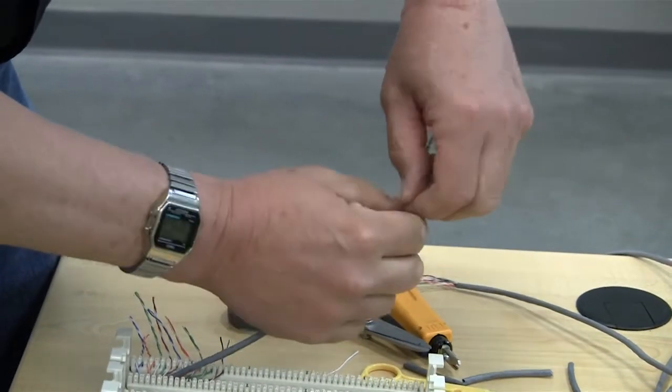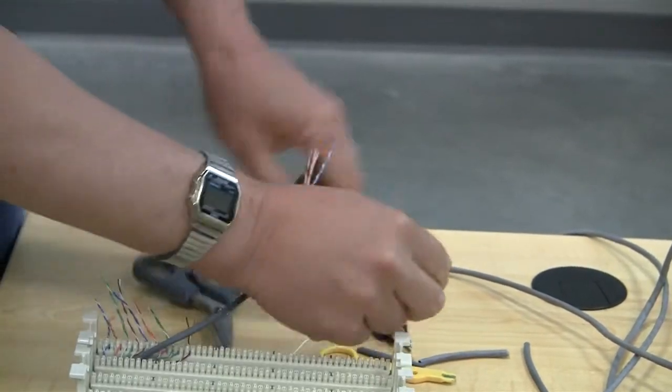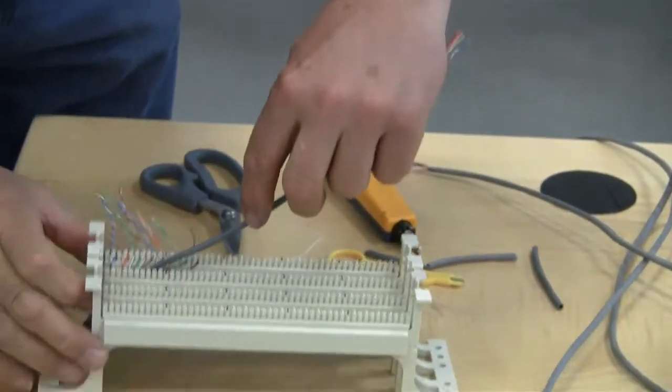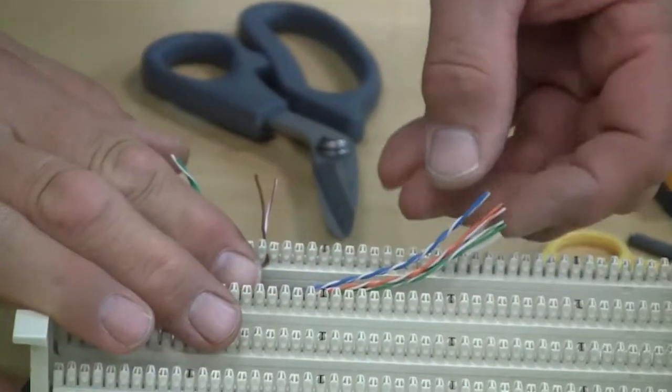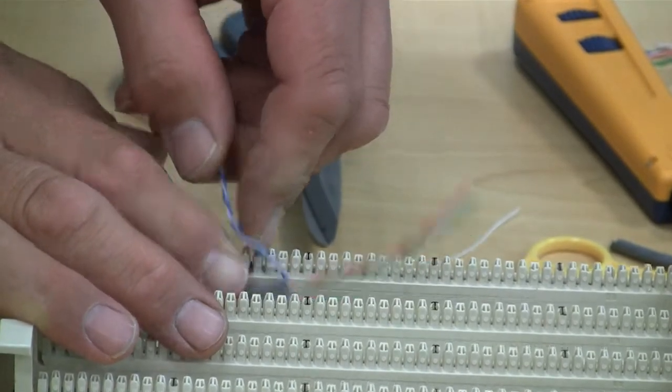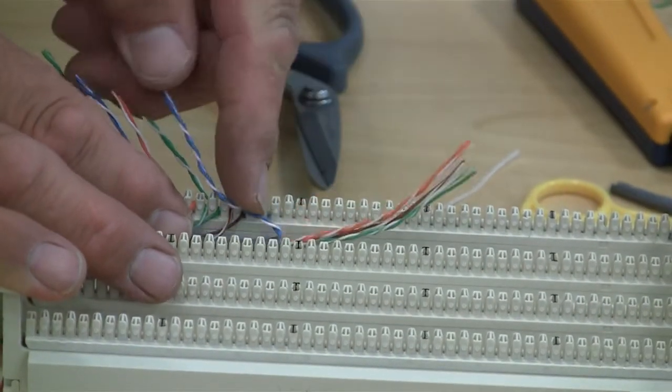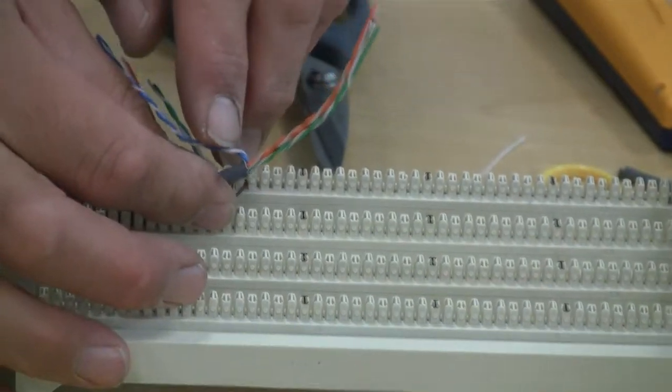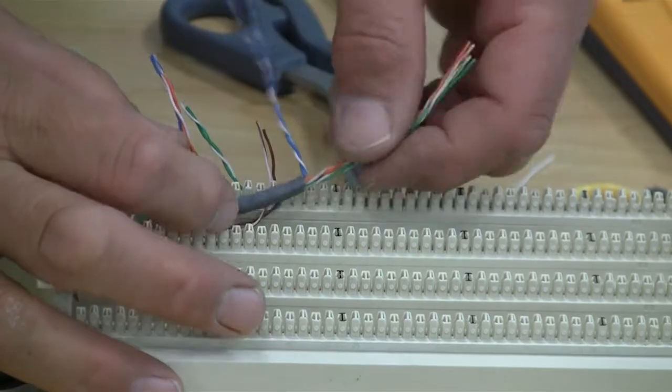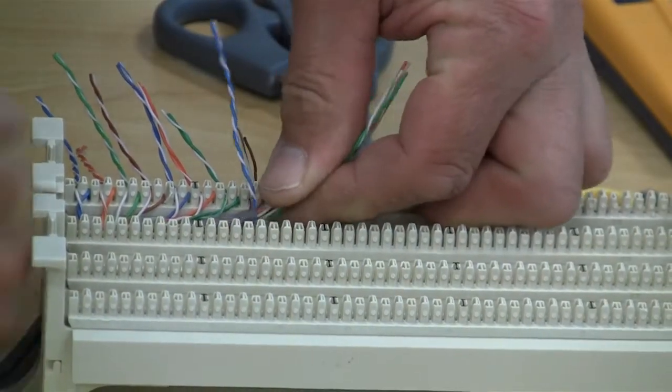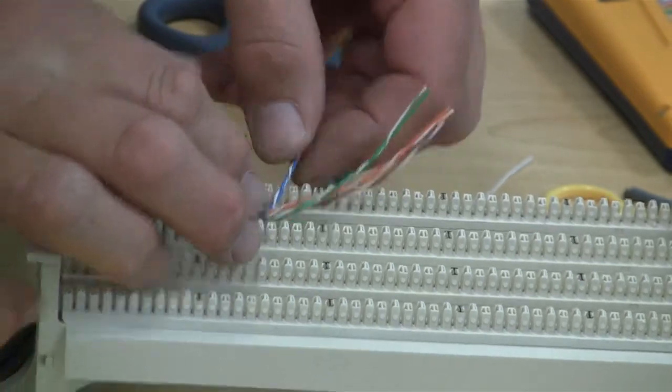Some of the things we're looking for that we don't want to do with the data cable is leave the jacket too long and bring the pair back against the jacket. This is basically a kink right here which will slow our data down, so we want to make sure that we do not have kinks. We want a nice sweep coming out of the jacket.